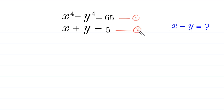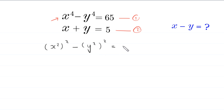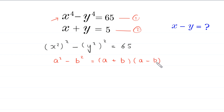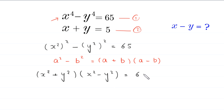Let's call the first equation number one and the second equation number two. We start from equation one, which can be written as (x squared) whole squared minus (y squared) whole squared is equal to 65. By using the algebraic identity a squared minus b squared equals (a plus b)(a minus b), this becomes (x squared plus y squared) times (x squared minus y squared) equals 65.